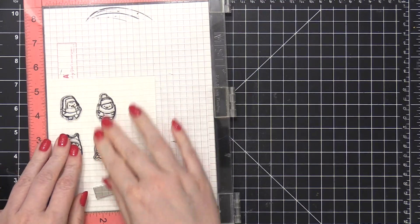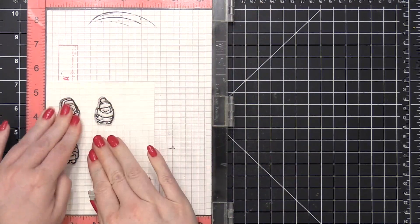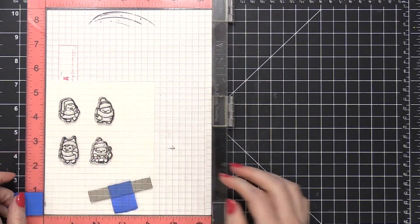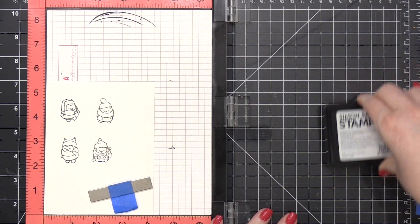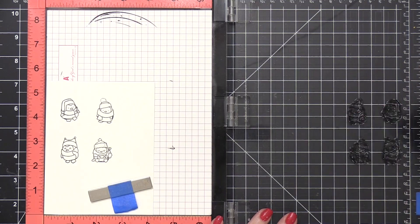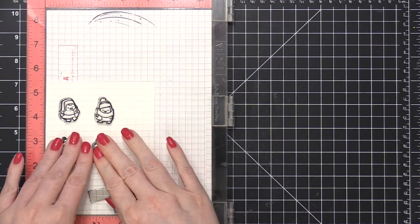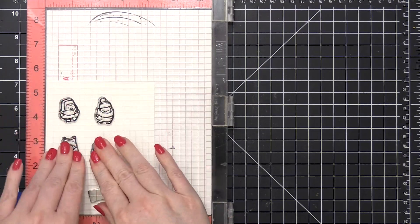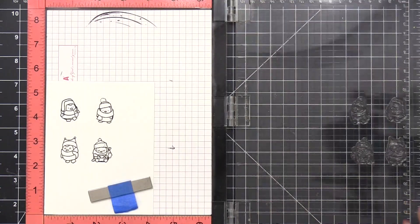Starting out by stamping four of the little penguins in Simon Says Stamp intense black ink. I'm stamping this onto some Neenah solar white card stock and I'm actually going to stamp the images twice. This is for a couple of reasons. The first one is I want to get a really thick black line and the second reason is my ink pad is getting just a little bit dry. So in order to get that thick line, I'm gonna have to stamp it twice no matter what.